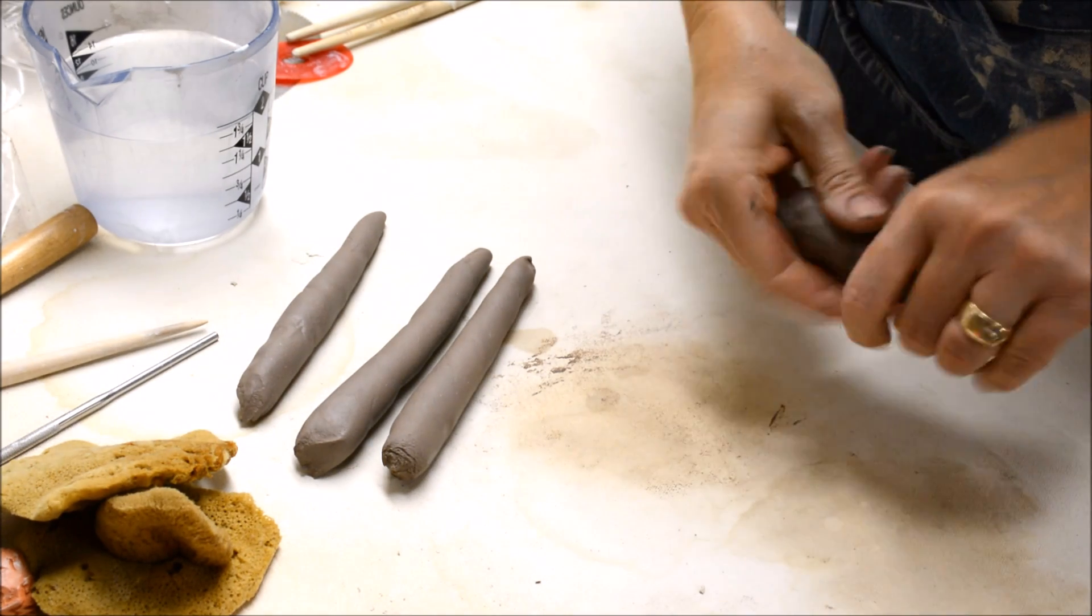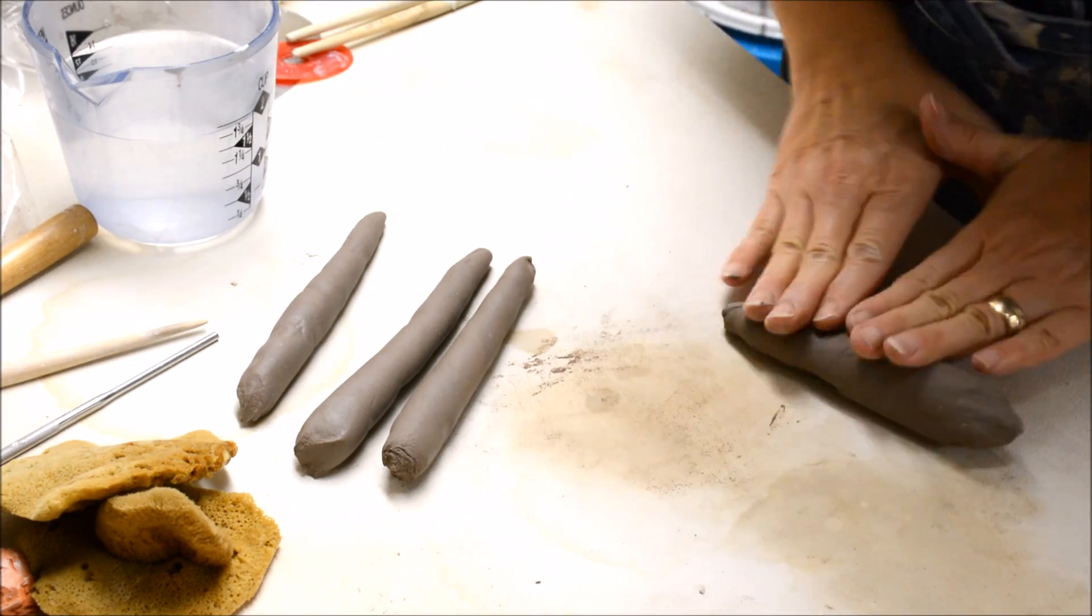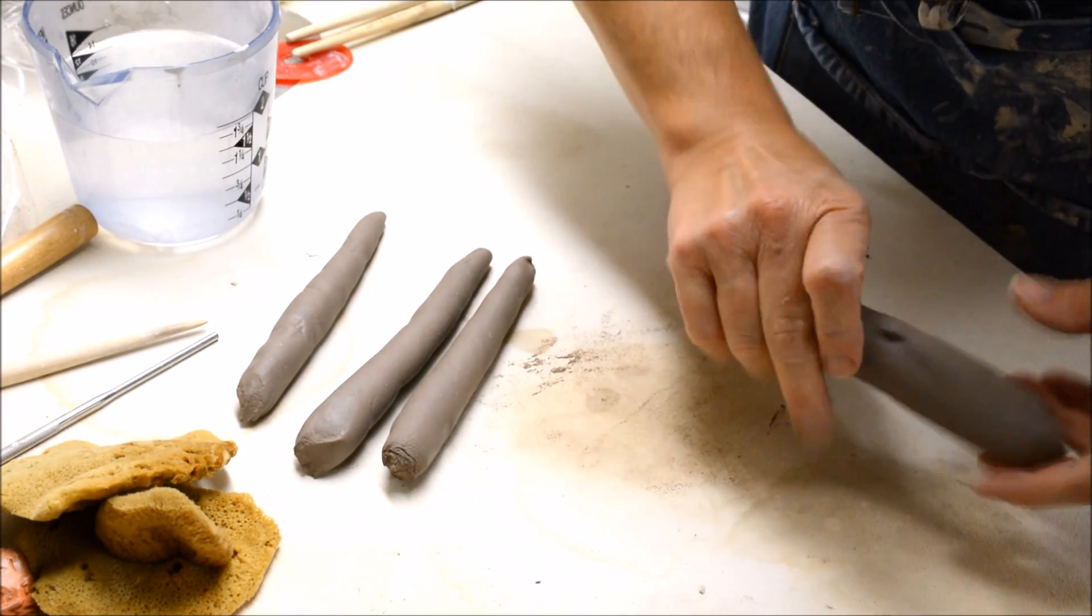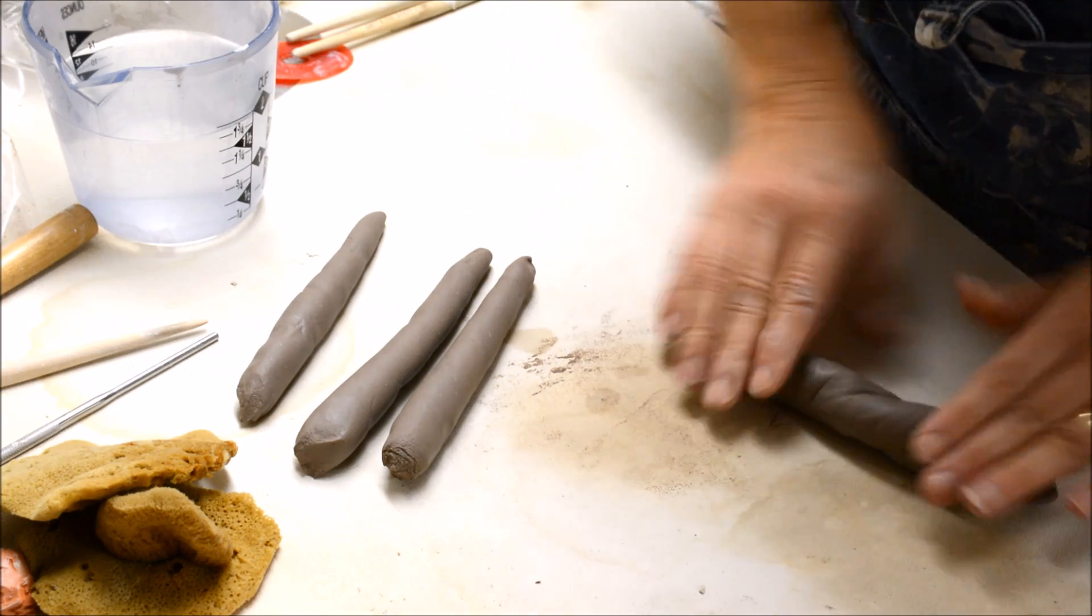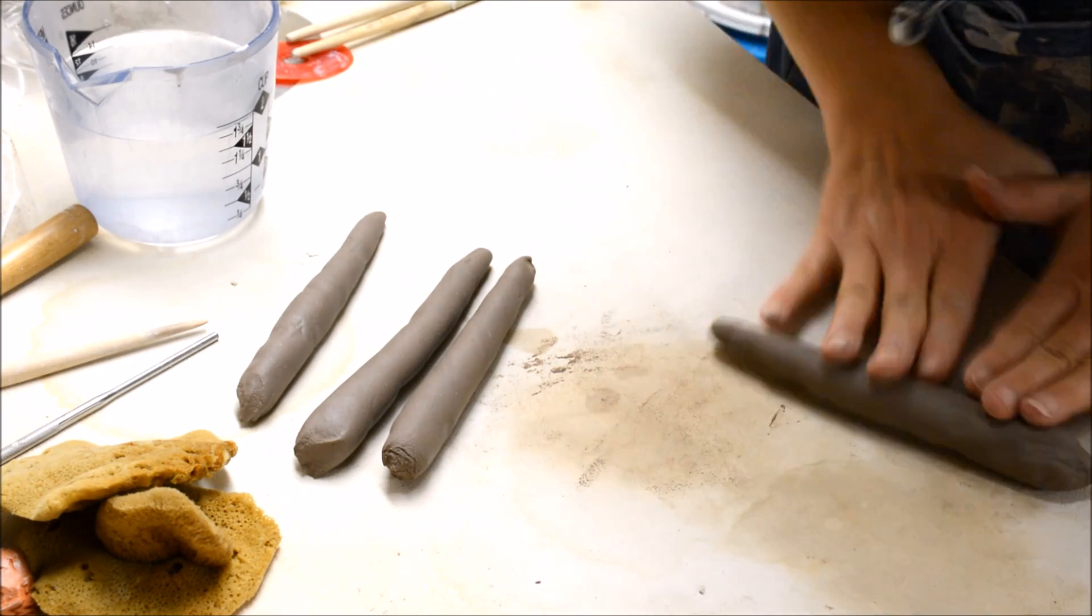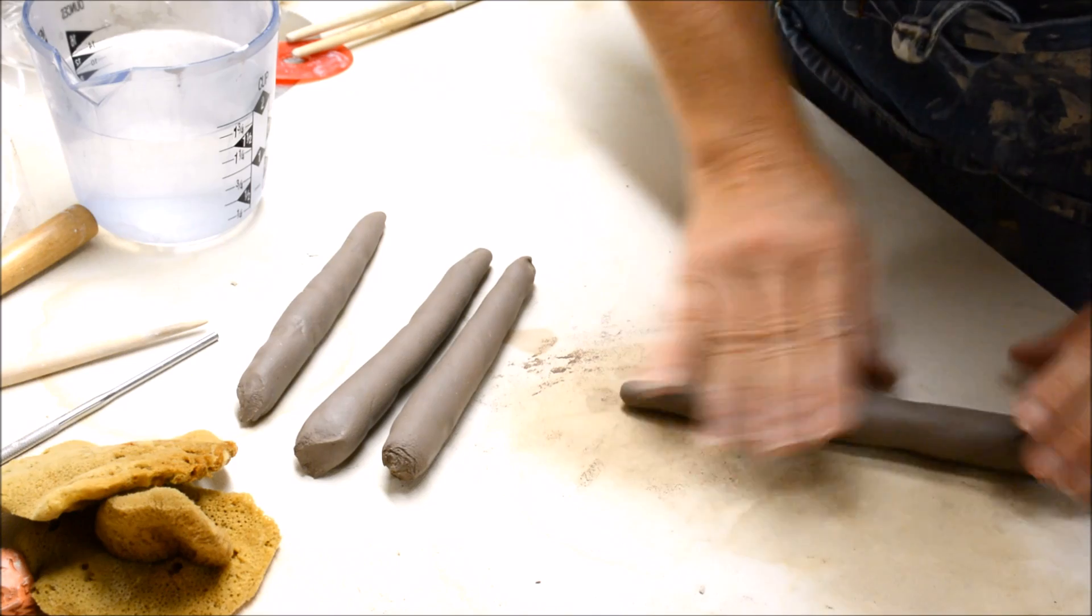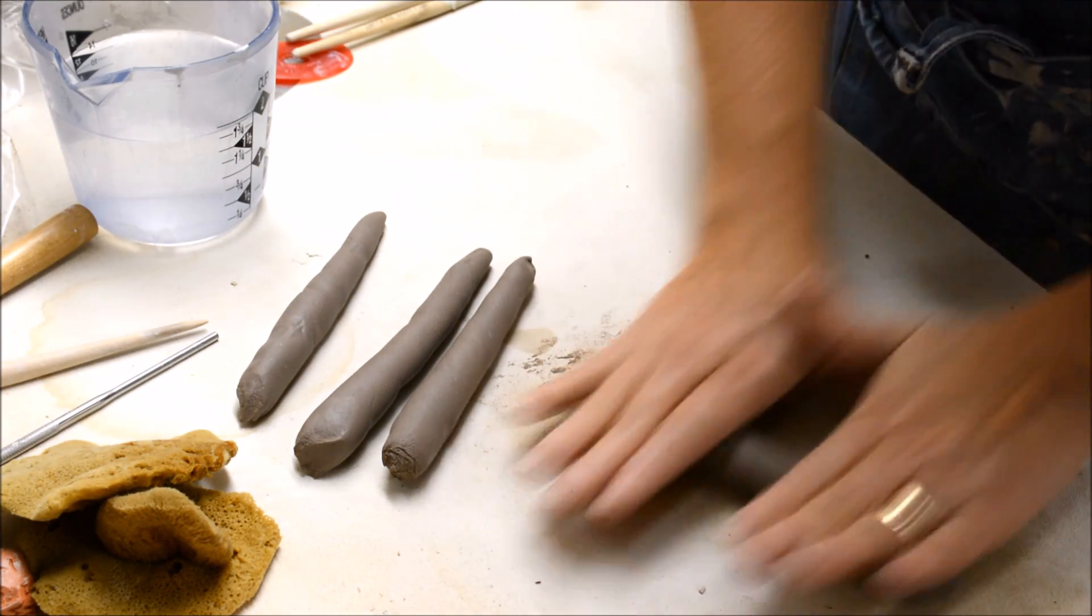Once I get my carrots made, then I'm going to be shaping them and storing them on a tray. I have three cups and I need a handle, so I'm going to make four handles.